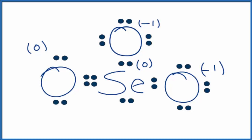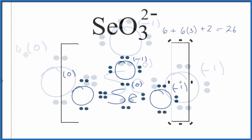We should put brackets around it to show that it's an ion. And then we could write 2- out here. You'll note that there are resonance structures for this compound here. This double bond could be here. We could have put it here or here.